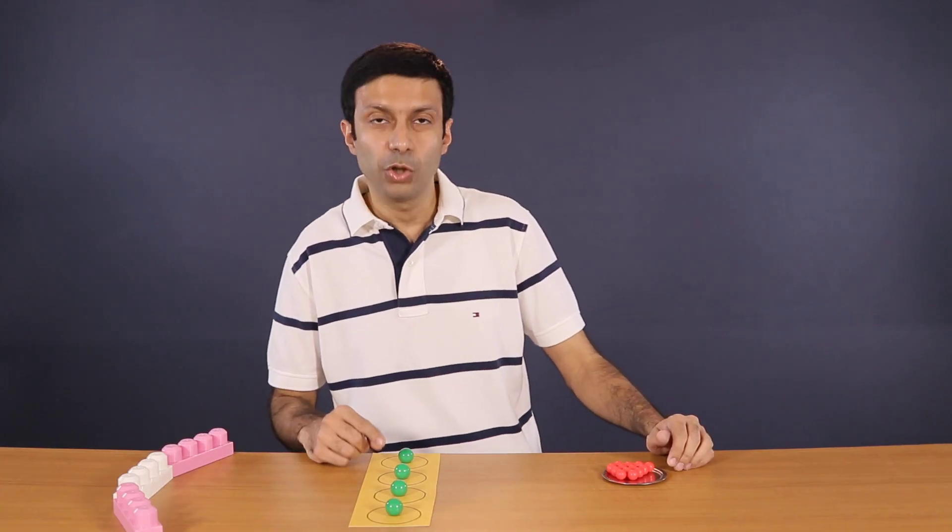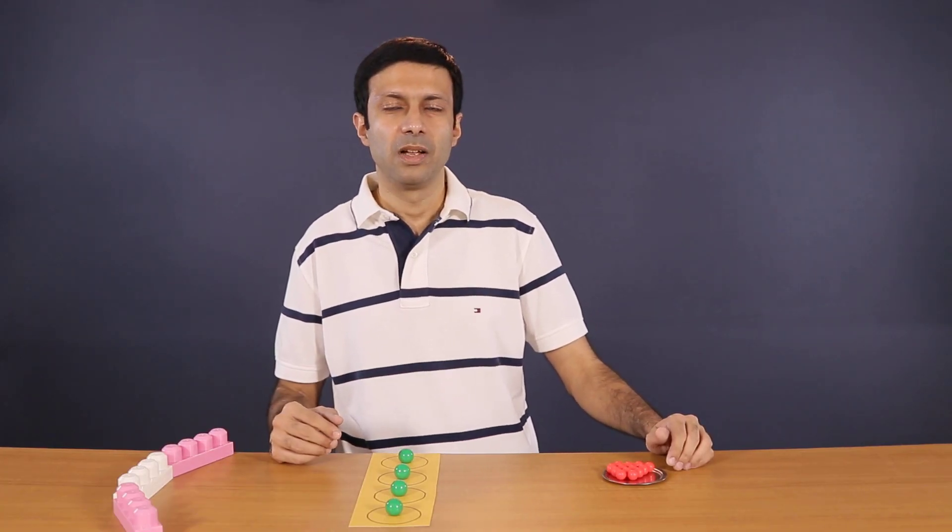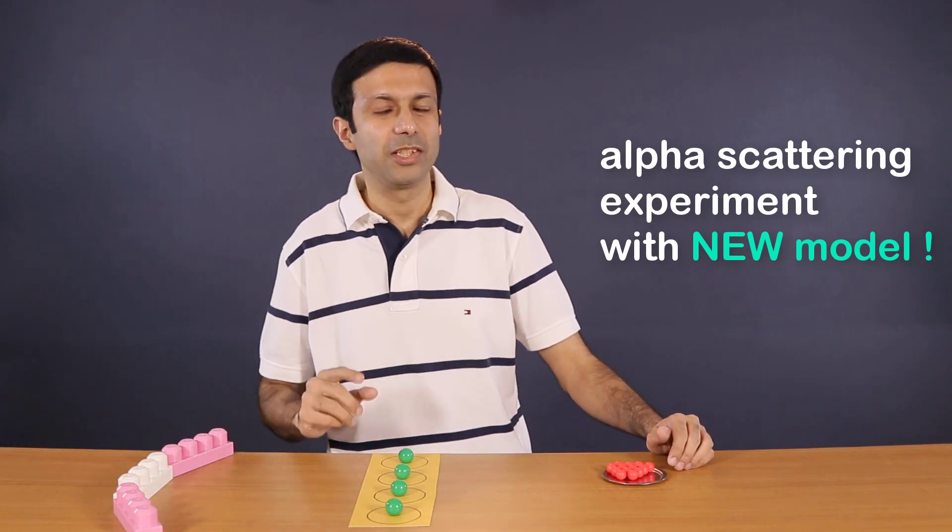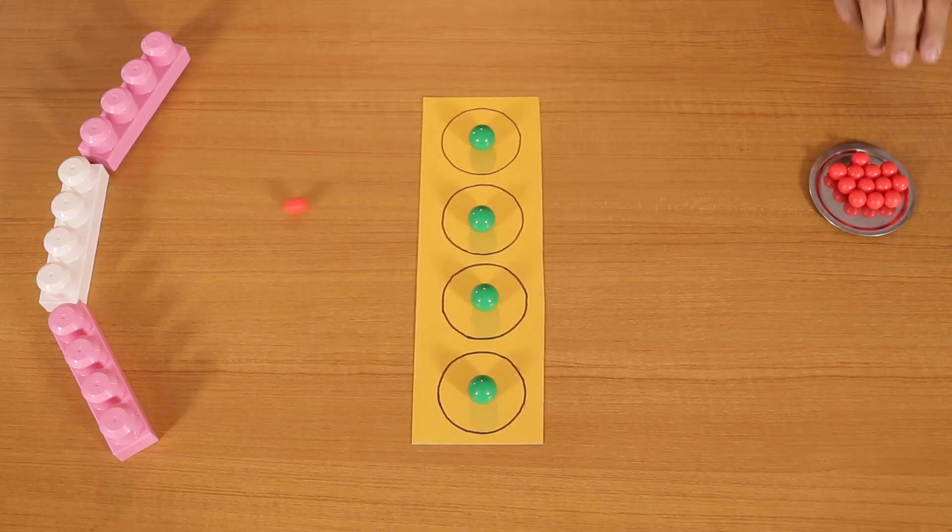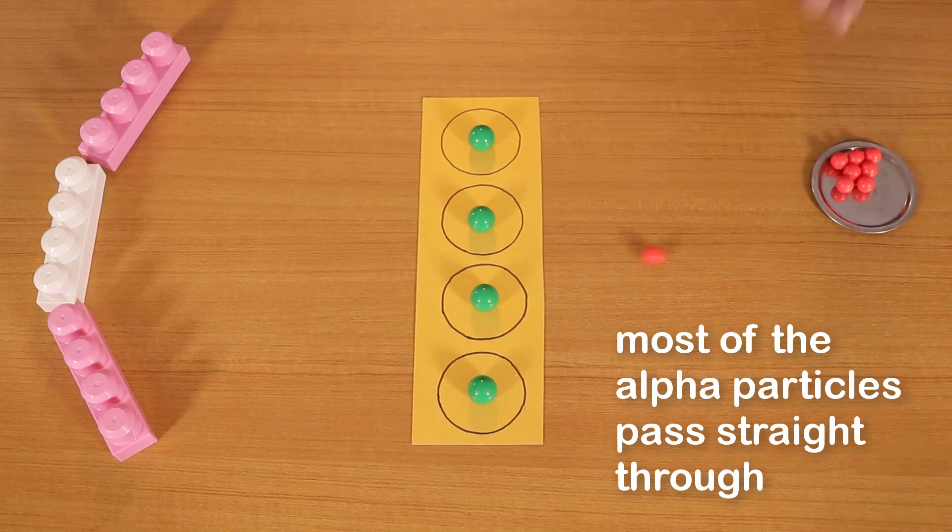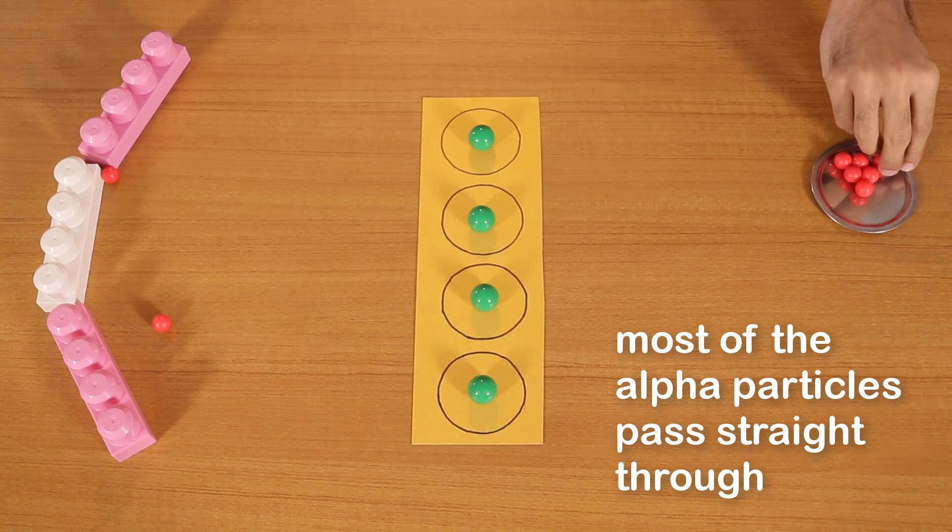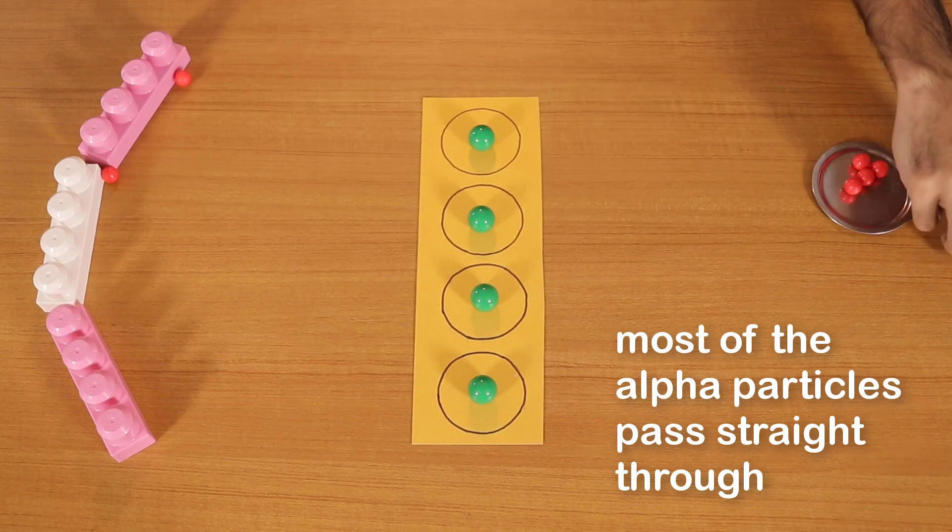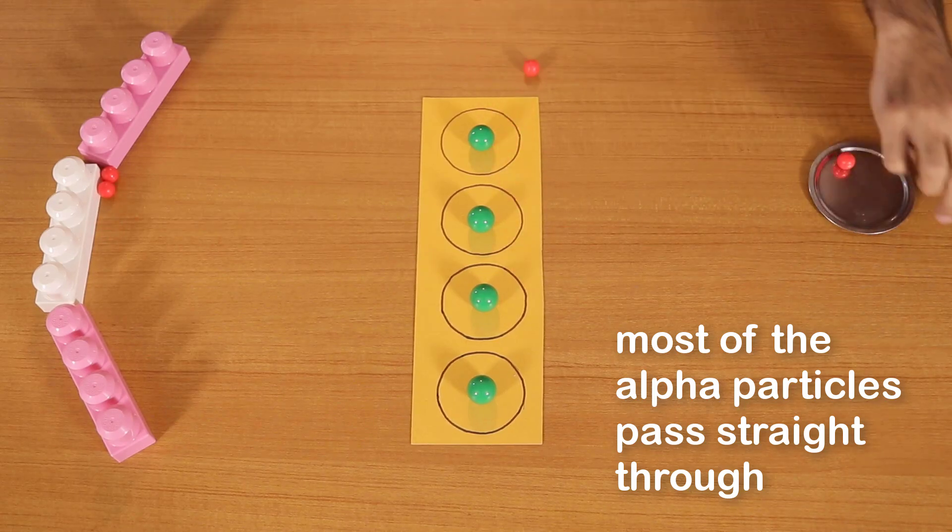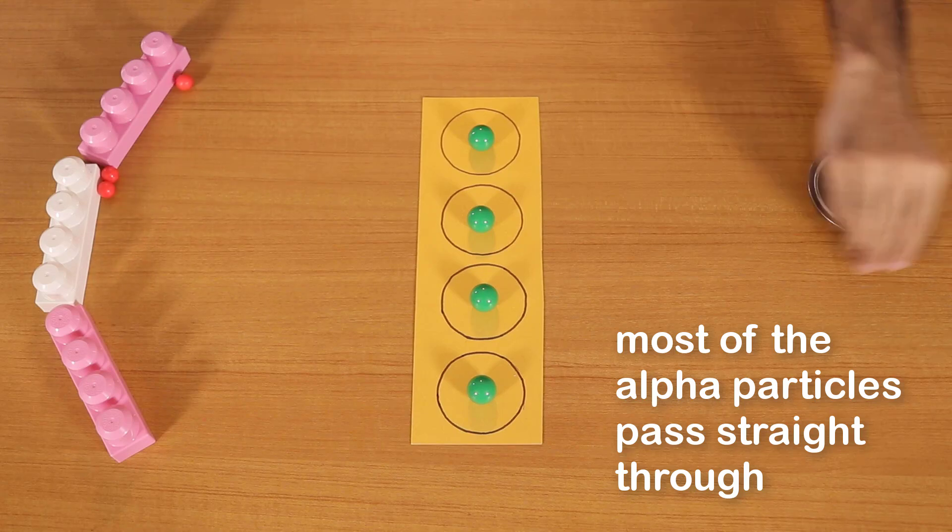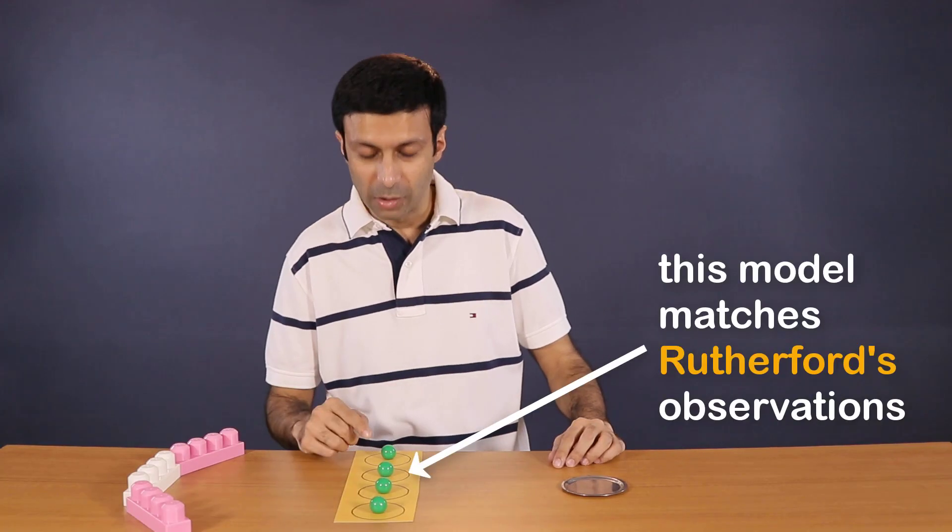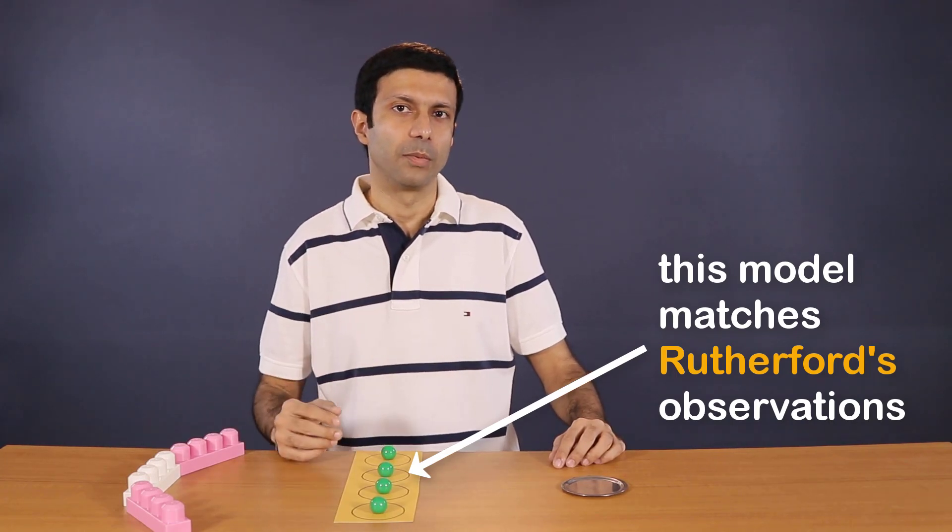So this is our new model of the atom. Let's perform the alpha scattering experiment once more with this new model now. And as you can see most of the alpha particles go straight through without being deflected. Only a small number are deflected away, and even fewer rebound back. So this model matches Rutherford's observations.